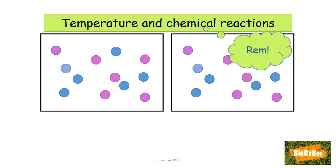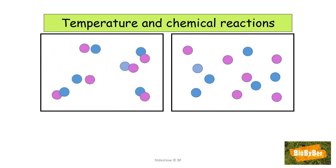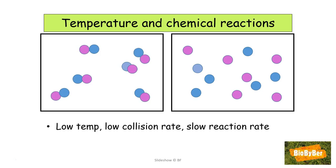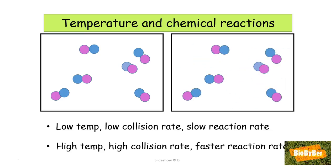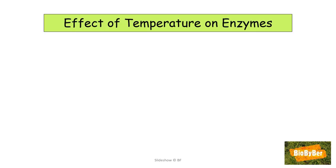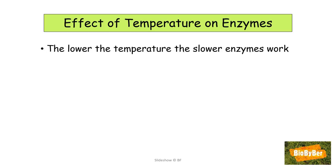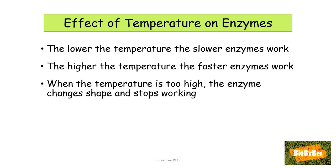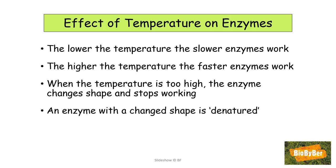Before looking at the effect of temperature on enzyme activity, let's recall what we know about temperature and chemical reactions. Chemical reactions occur due to collisions between reactants. When the temperature is low, there is a low collision rate and a slow reaction rate. When the temperature is high, there is a high collision rate and a faster reaction rate. When the temperature is too high, however, the enzyme changes shape and stops working — it is denatured.